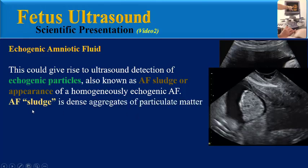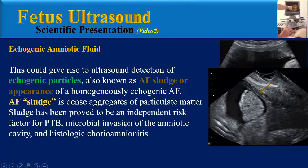Amniotic fluid sludge is a dense aggregate of particulate matter. Sludge has been proved to be an independent risk factor for preterm birth, microbial invasion of the amniotic cavity, and histologic chorioamnionitis.